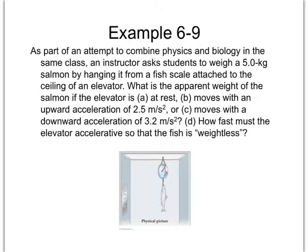Okay everybody, welcome back. This is continuing chapter 6 on forces, and we're going to be doing example 6-9. I call this the fish scale problem. In this problem, we have a fish on a scale, supported by the scale, and the whole fish-scale system is in an elevator. As you know, elevators tend to go up and down, and so this elevator is going to be in different stages of motion.